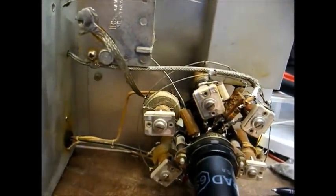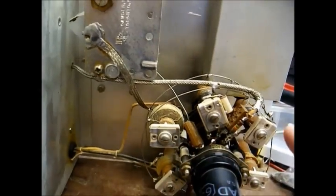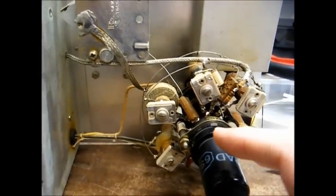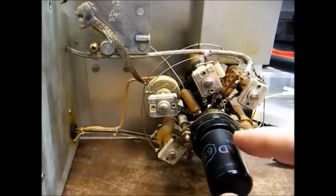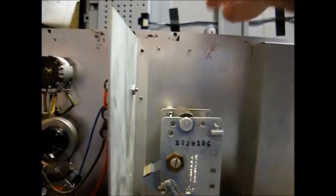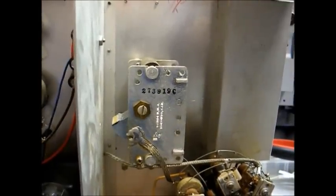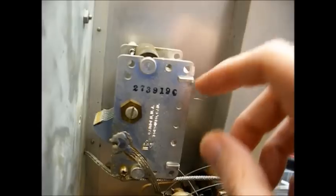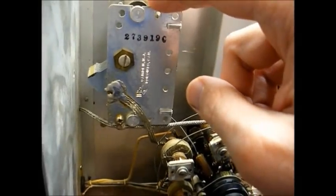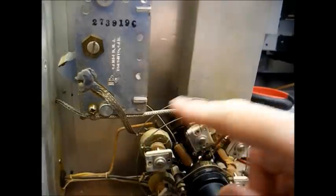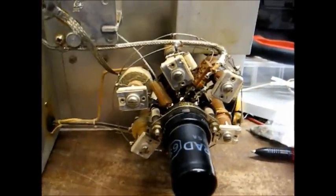And these are your trimmer capacitors. Their purpose is for calibrating each band so that the frequency output of the generator matches what's read on the front control dial here. And here's our variable tuning capacitor. When used in conjunction with these coils, you get the proper RF output frequency.